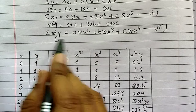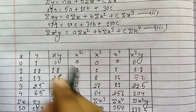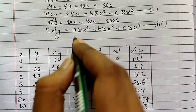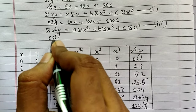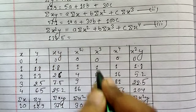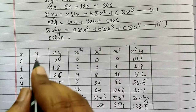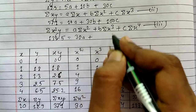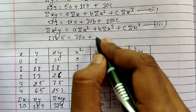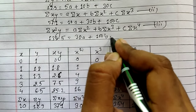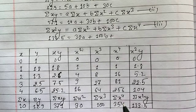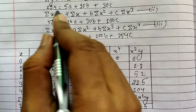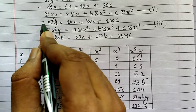So our three equations are: 12.9 equals 5a plus 10b plus 30c; 37.1 equals 10a plus 30b plus 100c; and 133.5 equals 30a plus 100b plus 354c. Now solve equations 1, 2 and 3 to get the values of a, b and c.